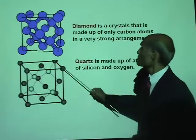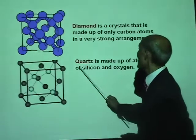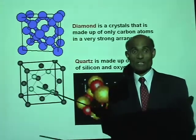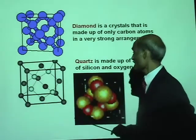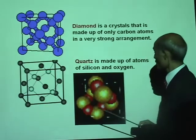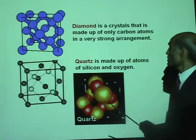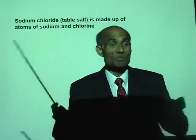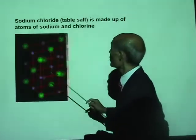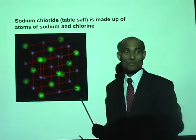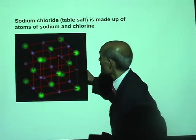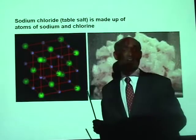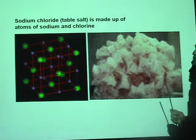Quartz crystal is made up of atoms of silicon and oxygen. Here we have silicon dioxide again — quartz is made up of silicon and oxygen. Sodium chloride, a very commonly used crystal at home — it's table salt. It is made up of atoms of sodium and chlorine, arranged in a very regular pattern, and this pattern is repeated in the making of the crystal. This is the solid crystal of sodium chloride.